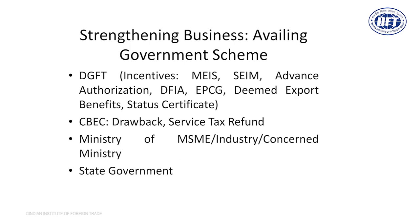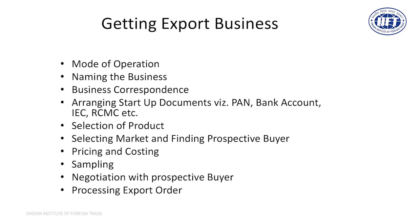And that can happen only if you are able to reduce your cost — cost of production — and you are able to get the maximum profits by managing everything properly. Government schemes is one thing which you must know about. DGFT is operating through the foreign trade policy, and this particular foreign trade policy has been constantly working on different aspects. So Ministry of MSME, state governments, DGFT — all these institutions will help you a lot. You have to decide what is the mode of operation. You have to decide what is the name of your organization you are going to think about. Then you have to arrange startup documents: PAN, bank account, IEC, RCMC, etc. You need to select a product, then you have selected the market. You know what are the prospective buyers. You have decided your pricing and costing.